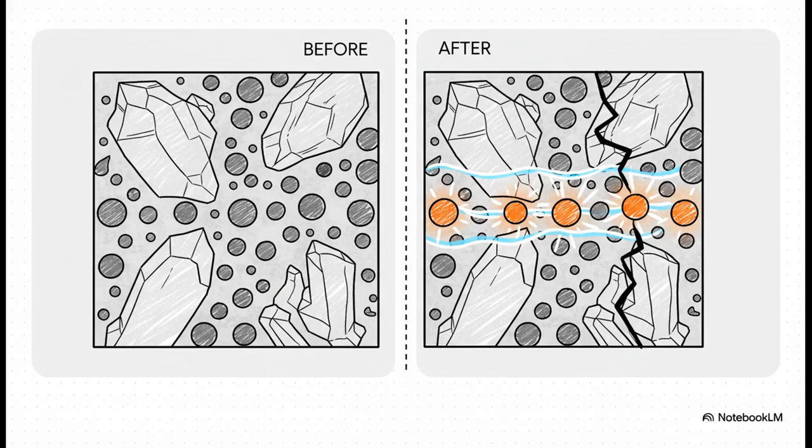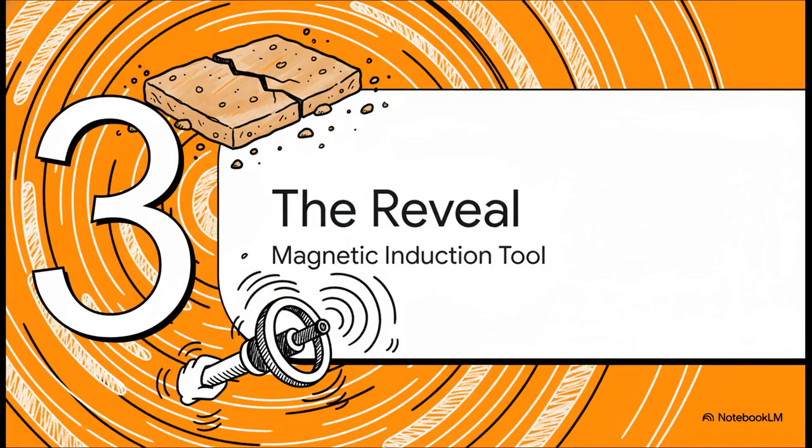These two different parts of the rock behave in completely opposite ways when you introduce energy. The little metal bits heat up super fast and expand. But the silica, the quartz that surrounds them, it's a terrible conductor. It barely heats up at all. So you have these little metal specks suddenly puffing up inside a brittle crystal cage that isn't expanding with them. What happens? Crack. The silica just shatters from the inside. So the billion dollar question is: how do you trigger that reaction? How do you heat up only the metal bits inside the rock?